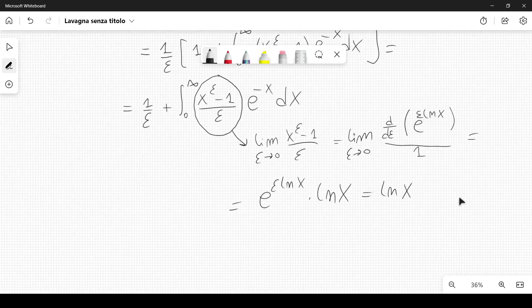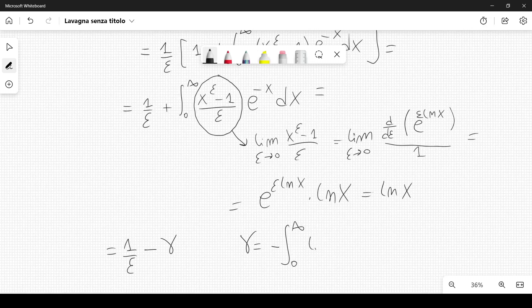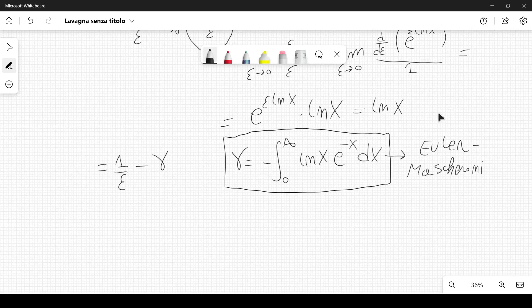So I can rewrite this as 1 over epsilon minus gamma, where gamma is a constant equal to minus the integral from 0 to infinity of ln x, e to the minus x dx. This is called the Euler-Mascheroni constant. It's a very important constant, and I will say more in the next video about this constant and its significance.